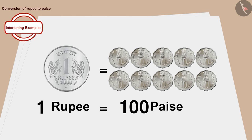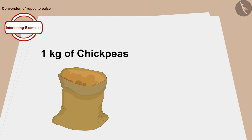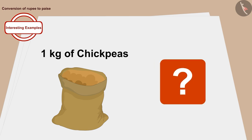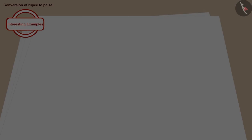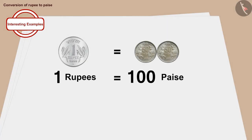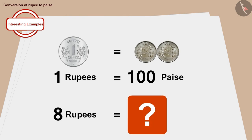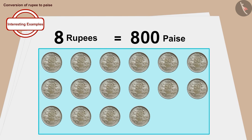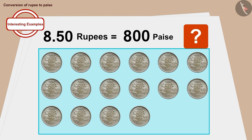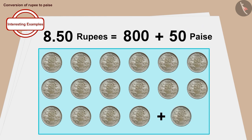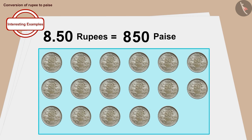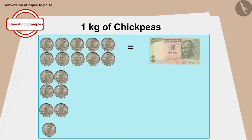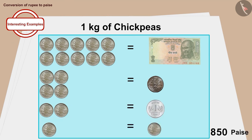Children, do you remember that in the last video we learned that one rupee is worth 100 paise? Now if we want to know how much the price of chickpeas is in paise — one rupee equals 100 paise, so eight rupees equals eight times 100, or 800 paise. We have to add 50 paise to 800 paise. In this way, the price of one kg of chickpeas is 850 paise.